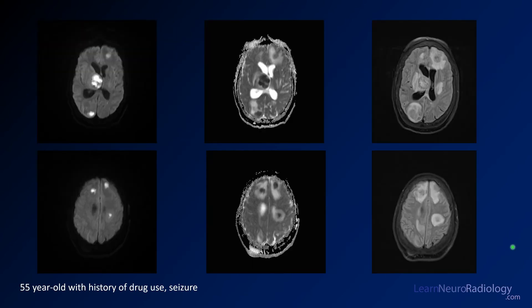On MRI, diffusion images show extremely bright signal — the lesion in the right thalamus is very bright, with another lesion in the right occipital lobe and scattered lesions in the bilateral frontal lobes. On ADC they are extremely dark, confirming very low diffusion coefficient due to pus collecting in these fluid collections. On FLAIR there is a lot of edema surrounding those lesions — very edematous lesions with central pus.